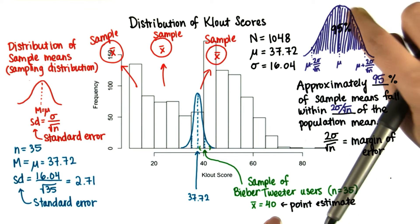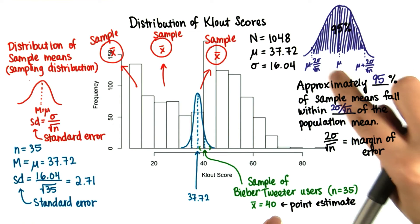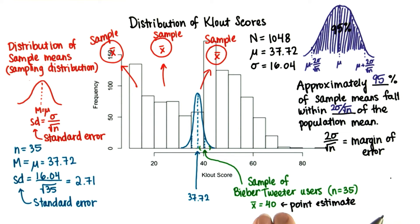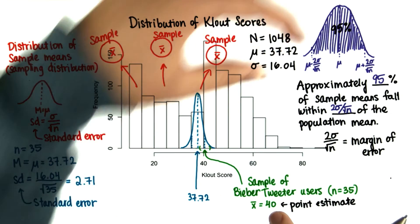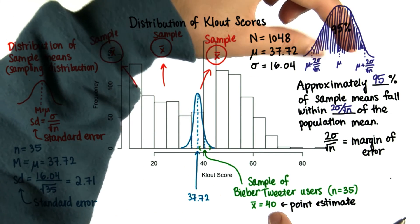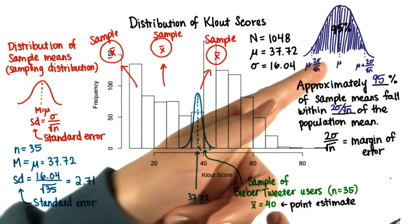Now if 95% of sample means are within two times the standard error, then this mean value has a 95% chance of being within two times the standard error of this new population mean, if everyone used the Bieber tweeter.